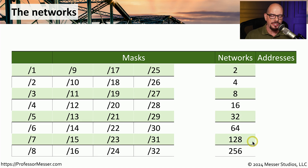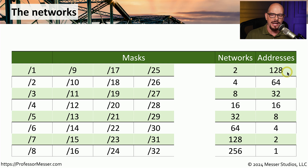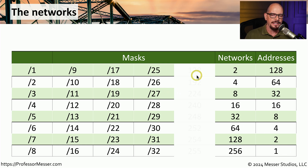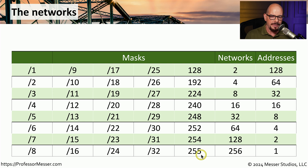We also have a networks column, calculated by starting with the number two and doubling it all the way up until 256. Then there is an addresses column which starts with 128, dividing by two all the way down until you get to the number one. To help with conversion between CIDR block notation and decimal mask, we also add a subnet mask in decimal column.